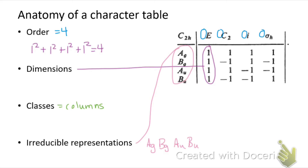The irreducible representations are Ag, Bg, Au, and Bu, and they represent symmetries. We can think of an irreducible representation as explaining how something is affected by each of the operations in our point group. For example, in the Bg irreducible representation we see ones and negative ones: Bg is symmetric with respect to identity, not symmetric with respect to C2, symmetric with respect to inversion i, and not symmetric with respect to sigma h. That information — one, negative one, one, negative one — is encapsulated by the label Bg.